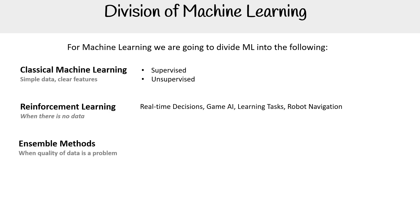We have ensemble methods, used when quality of data is a problem. You're going to have different strategies to work with multiple models or algorithms to achieve a better outcome. Here we have things like bagging, boosting, and stacking. You'll definitely see the word boosting more when we get to that.